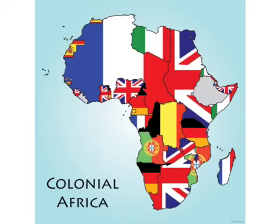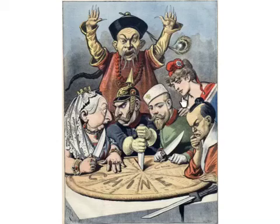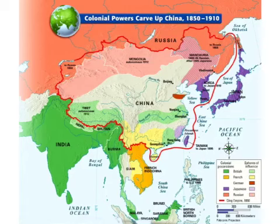Watching other nations carve up Africa into colonial holdings in the 1880s, and then China in the 1890s, we decided this maybe wasn't so bad. We'd already missed out on Africa, and Asia had been carved up by the British, French, Germans, Japanese, and Russians. By the late 1800s, many Americans were thinking it was time to get involved economically if nothing else — if we couldn't have colonies of our own, let's find a way to sell them some stuff.